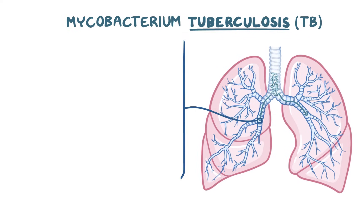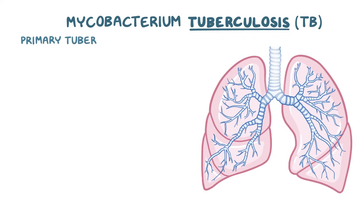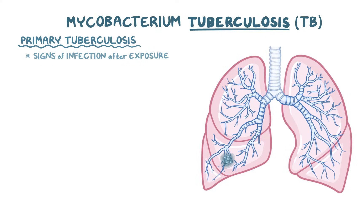At this point, somebody has developed primary tuberculosis, which means that they have signs of infection soon after being exposed to TB. Even though it sounds bad, most people at this stage are actually asymptomatic, or maybe have a mild flu-like illness.